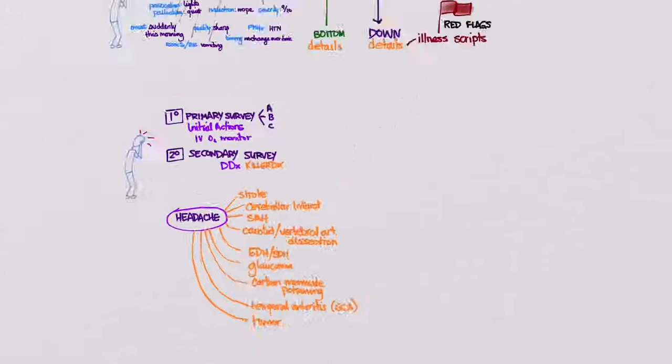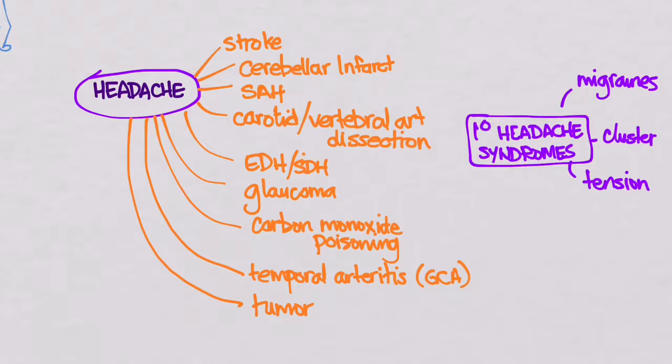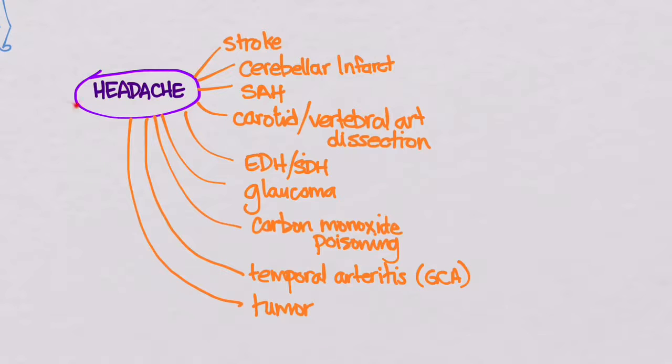Now, look how different this list is from the one that we came up by using bottom-up thinking. We only had a few things in our differential there. Here, we have a pretty big differential diagnosis. And contrast this from the primary headache syndromes, like migraines, cluster, and tension, which tend to be headaches that are recurrent. The patient has had these before. They can hurt a lot and they can be pretty distressing. But these ones are probably not going to kill you. The other ones are these secondary headaches.